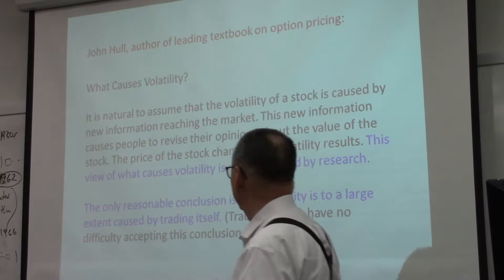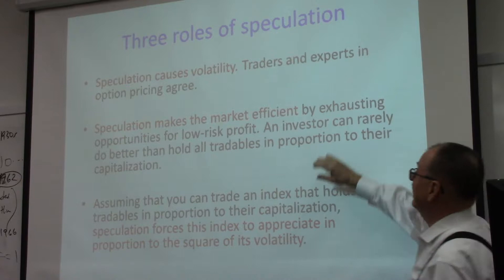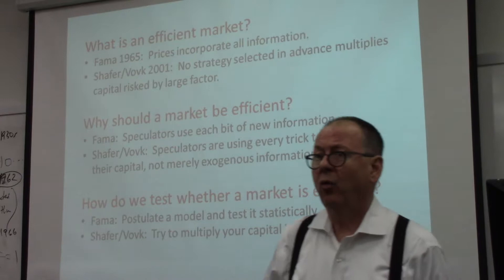The conclusion of the theory is that over time the market goes up. I'm summarizing three roles of speculation: speculation causes volatility, speculation makes the market efficient, and speculation causes the market to go up.